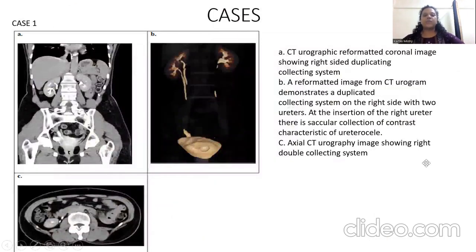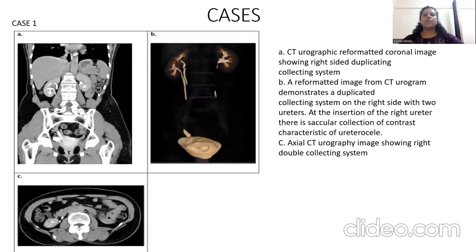Coming on to the cases. Case number one: this is the CT urography reformatted coronal image showing a right-sided duplicating collecting system. Image B is a reformatted image of CT urography demonstrating a duplicate collecting system on the right side with two ureters. At the insertion of the right ureter, there is a circular collection of contrast characteristic of a ureterocele. Image C is an axial CT urography image showing the right double collecting system.